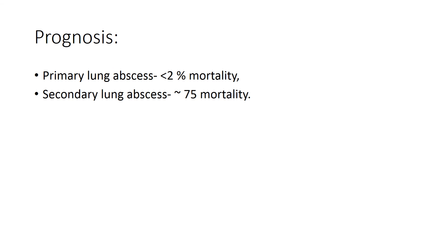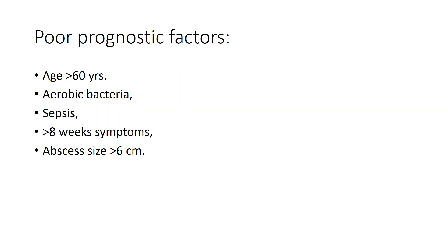Regarding prognosis, the mortality rate in primary lung abscess is two percent, while for secondary lung abscess it is around 75 percent. Poor prognostic factors include age over 60 years, involvement of aerobic bacteria, sepsis, symptoms lasting more than eight weeks, and abscess size greater than six centimeters.